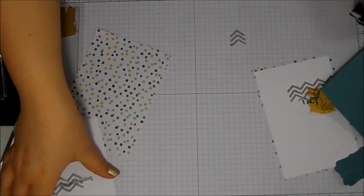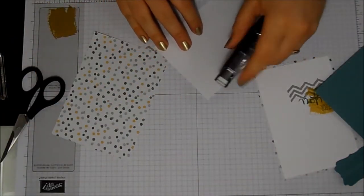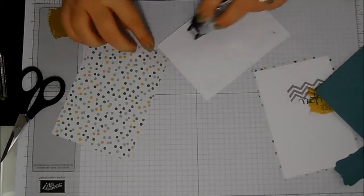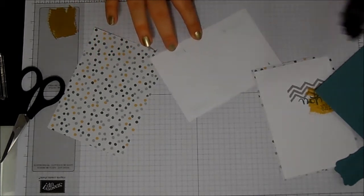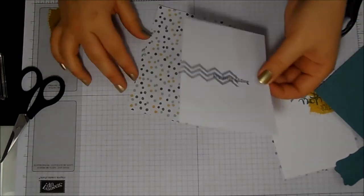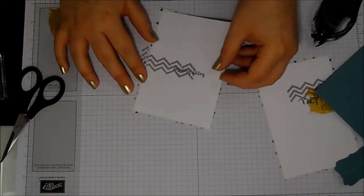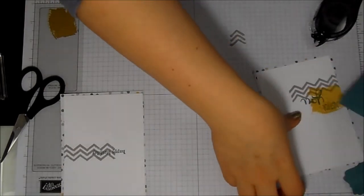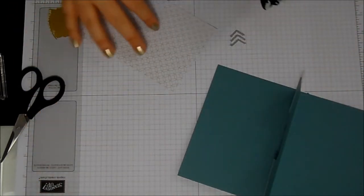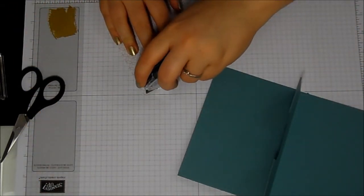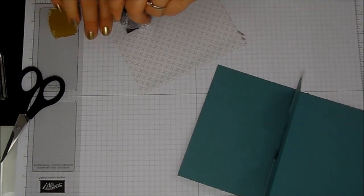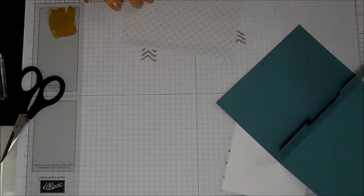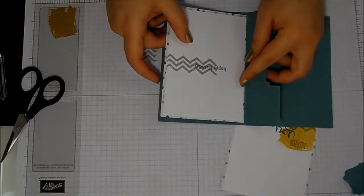I tend to use Snail or dimensionals when I'm sticking Whisper White onto things, because—or Fast Fuse, actually, I've been using a lot of—I wouldn't use a wet glue with Whisper White just because it has a tendency to show through. So that's the inside.